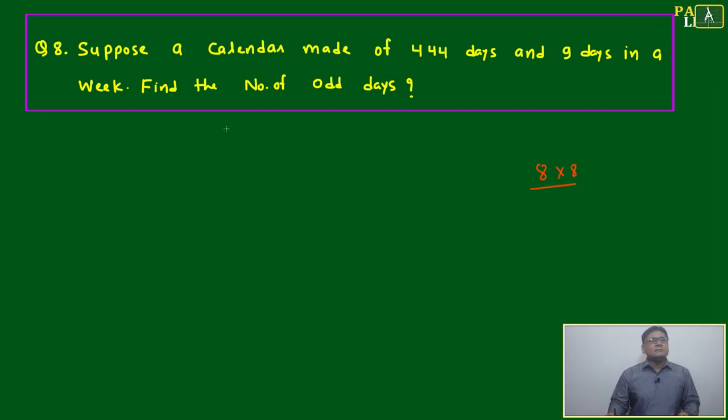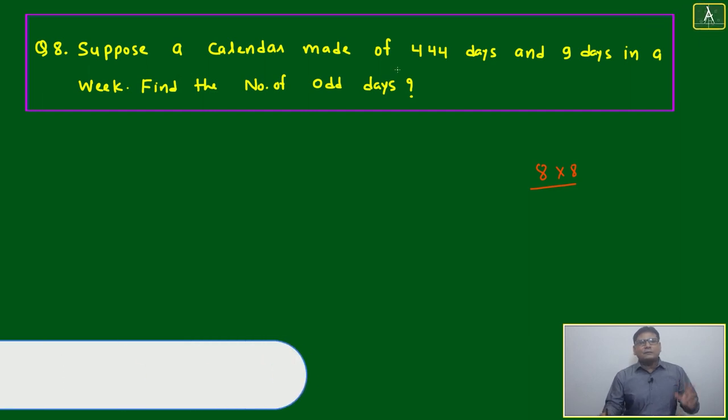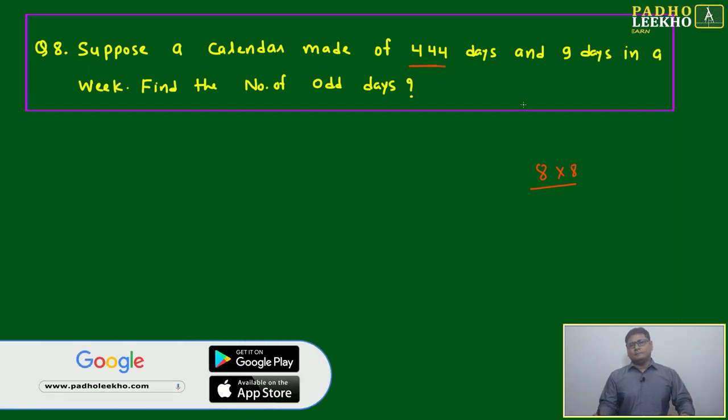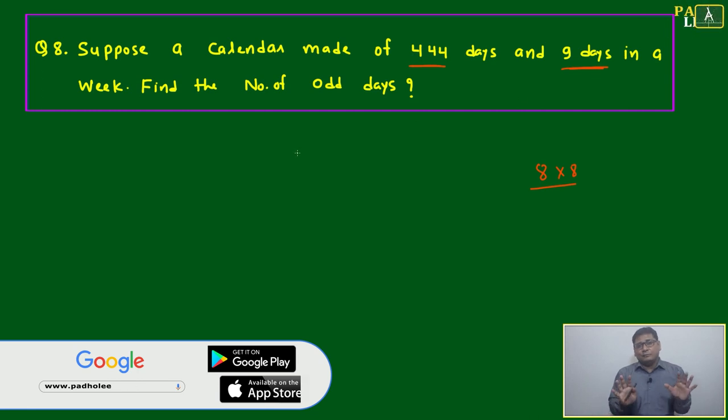Similarly, this question is based on a different type of calendar. Suppose a calendar is made of 444 days and nine days in a week. Find the number of odd days.